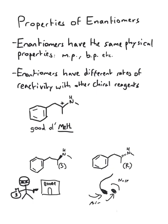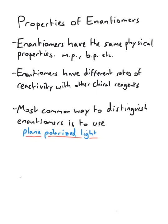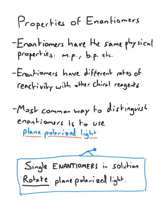However, taking the enantiomers to find out which one you have is probably a bad choice. The most common way to distinguish enantiomers is to use plane polarized light. Turns out another property enantiomers have is that single enantiomers in solution rotate plane polarized light. What on earth is plane polarized light? Let's look at it.